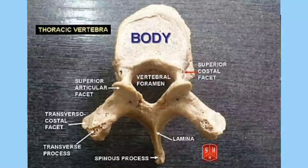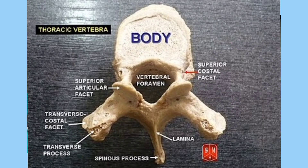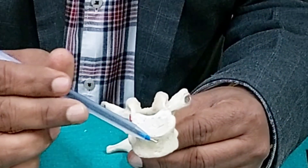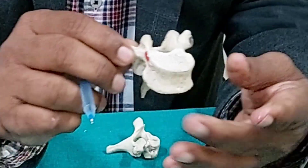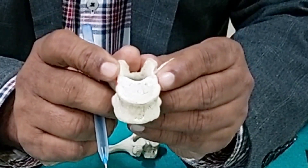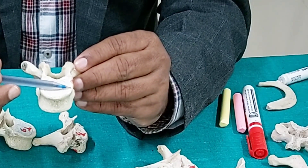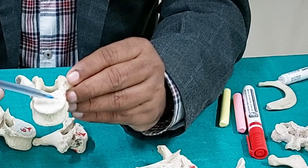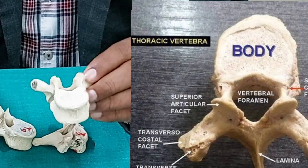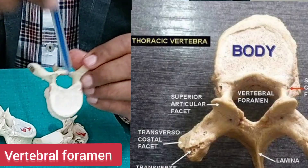What are the parts of a thoracic vertebra? Like all other vertebrae — cervical, thoracic, and lumbar — they share the same anatomical parts. This is the body, facing anteriorly, and this is the vertebral arch. The shape of the body is heart-shaped. Both the transverse and anteroposterior diameters are almost equal. Here is the vertebral foramen, which is almost circular.